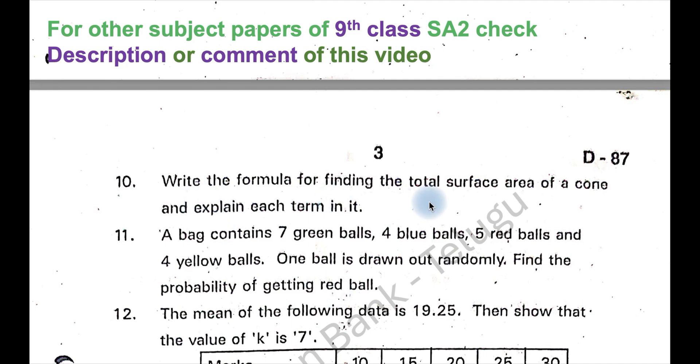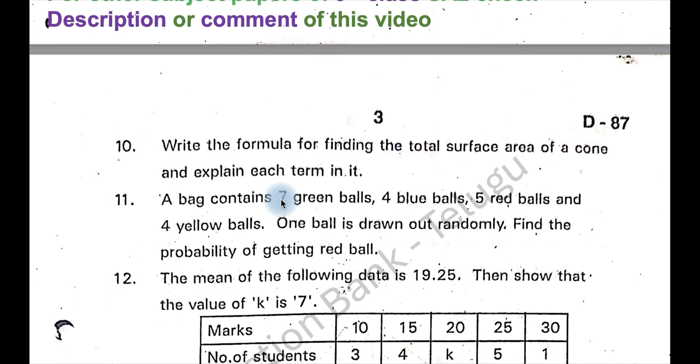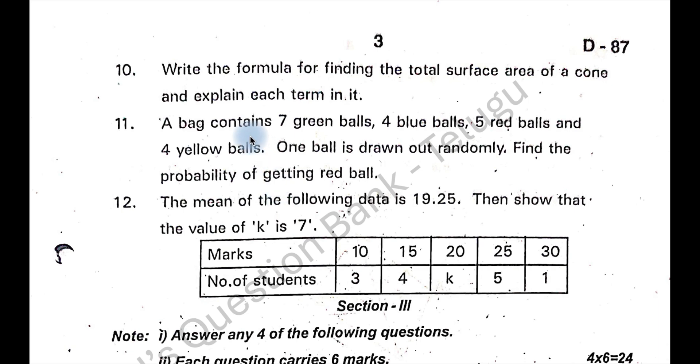What is the total surface area of cone? It is pi r square plus pi r l, where r is equal to radius, l is equal to slant height. Here total number of balls is 7 plus 4 plus 5 plus 4, that's 20, and the number of red balls is 5. So probability is 5 by 20 is equal to 1 by 4.